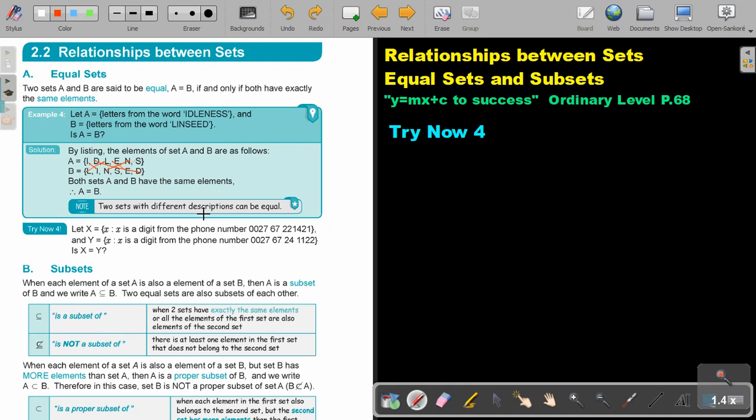Two sets with different descriptions can be equal. So the description was different, or the words were different. Let's look at, you can stop the video and do try now 4, you can continue the video as soon as you are finished.